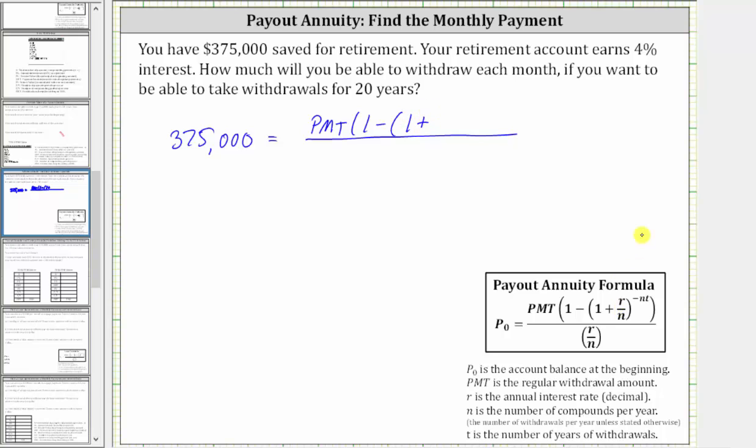We have one plus R is 4% as a decimal, which is 0.04. And then for N, the number of compounds per year, or the number of withdrawals per year, is going to be 12, because you want to withdraw an amount each month, and there are 12 months in a year.